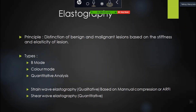Elastography comes under your blanket answer for breast ultrasound. It helps to confirm BIRADS 2 or BIRADS 4C/5, but does not reliably differentiate BIRADS 3 from 4A. For exam purposes: elastography characterizes lesions as benign or malignant based on stiffness. There are types: B-mode, color mode, and quantitative analysis. Two methods: strain wave elastography and shear wave elastography. Strain wave is based on manual compression or ARFI — acoustic radiation force impulse, where patient's breathing or cardiac movement creates the pressure automatically. Shear wave is available at our department.